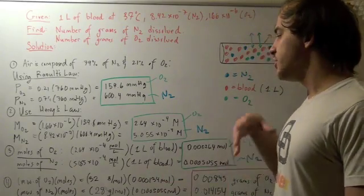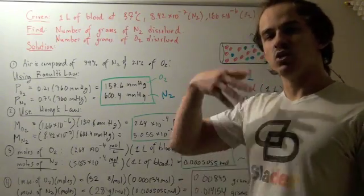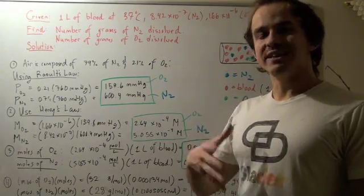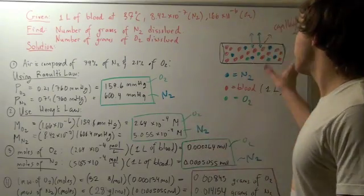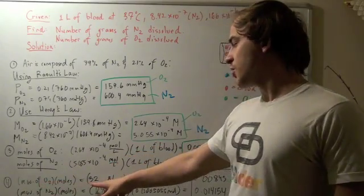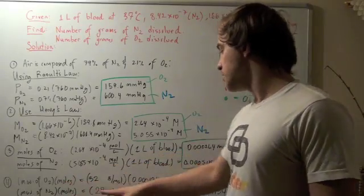Finally, we can use the moles, multiply that by the molecular weight of each respective compound. That will give us the number in grams of each compound dissolved within our system. The molecular weight of oxygen is 32 grams per mole, multiplied by the moles, which is 0.000134 moles...